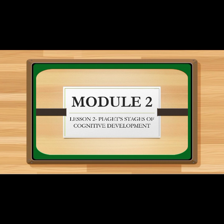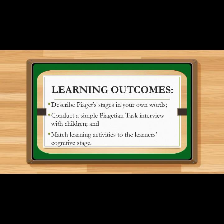Before anything else, we will be guided with the following learning outcomes. At the end of this module, as students, you should be able to first describe Piaget's stages in your own words, then conduct a simple Piagetian task interview with children, and lastly match learning activities to the learner's cognitive stage. In this lesson we will learn and discuss the different stages of cognitive development by Jean Piaget and the different basic cognitive concepts according to Jean Piaget.